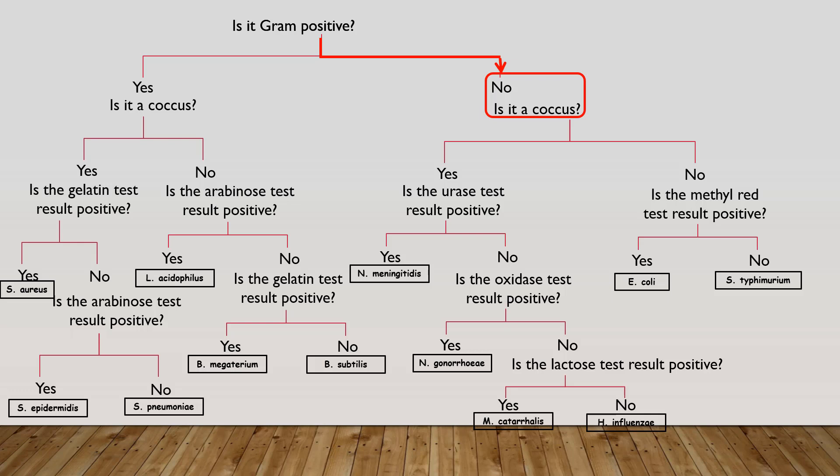This leads you to the next question. Is your unknown bacteria a coccus? And again, you went back to your gram stain and you saw that yes, it indeed was a coccus. So this leads you to the test result, the test reaction of urease. So you're going to have to go back and take your unknown and perform a urease test. You're going to incubate the test reaction for about 16 hours. And when you come back, you're going to find that your urease test was a positive result. So thus the answer to your question is yes, the urease test is positive. And now you've successfully identified your unknown bacteria. You've identified it as being a Neisseria meningitidis. And that's all there is to it.